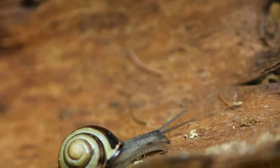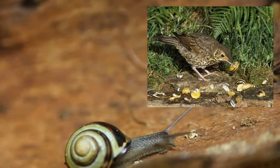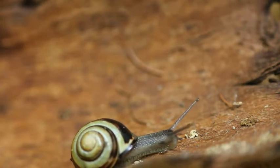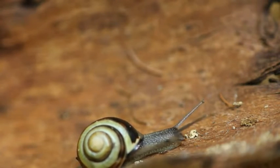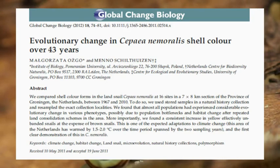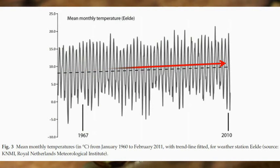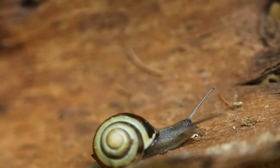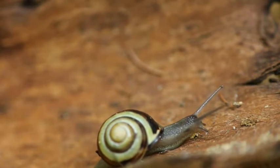There are several natural selection pressures believed to drive morph frequencies: visual selection by predators, frequency-dependent selection, and climatic conditions. Temperature plays a key role in climatic conditions, and several studies have investigated the effect of temperature on morph distribution. One example is the study of Osgo and Schildhuizen, which found evolutionary changes in phenotypes over a 43-year period during which temperature increased. In all studies so far, a variation of variables has been investigated, especially radiation, but none looked at the sole influence of temperature.